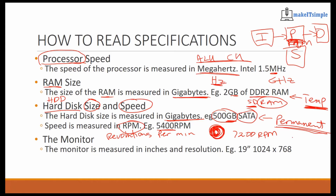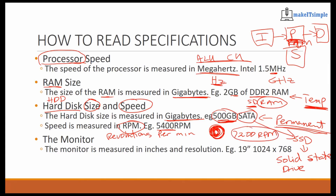Inside a computer you might have a hard drive called an SSD, which stands for solid state drive. A solid state drive has no spinning or moving parts. It is still measured in gigabytes, the type will be listed as SSD, and it won't have any RPM because it doesn't spin at all.